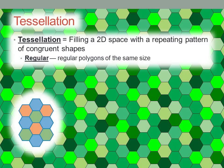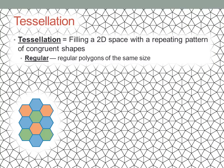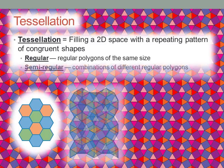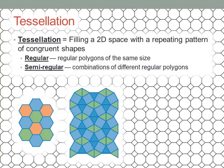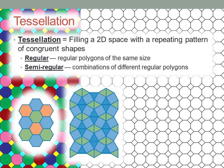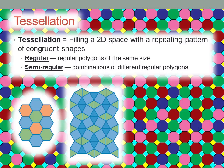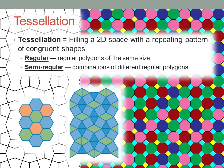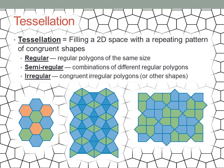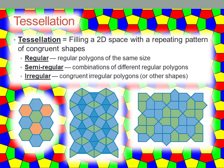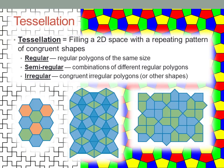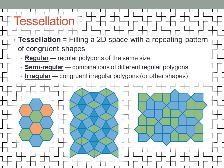A regular tessellation is made up of identical regular polygons. A semi-regular tessellation is made up of two or more different kinds of regular polygons. And an irregular tessellation is made up of congruent irregular polygons, or even other shapes.